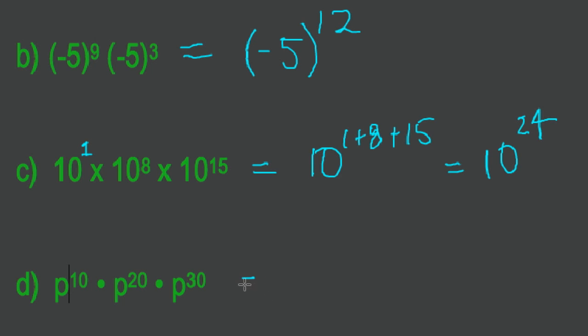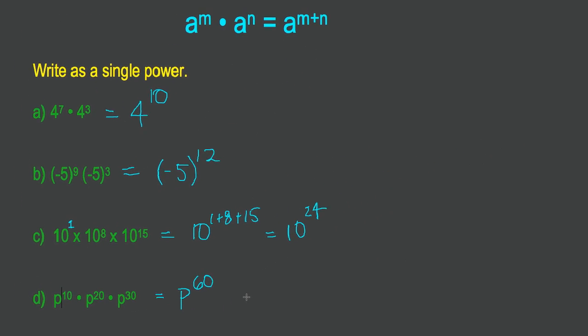I always like to extend what we're doing to variables, unknowns, because the rules still apply. So if we have p to the exponent 10, p to the exponent 20, p to the exponent 30, they all have the same base. We keep the base the same as a p and we just add 10 plus 20 plus 30 for a total of 60. And that's all there is to the law and I'm out of time.